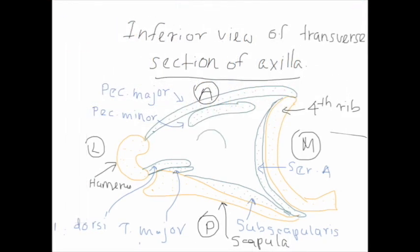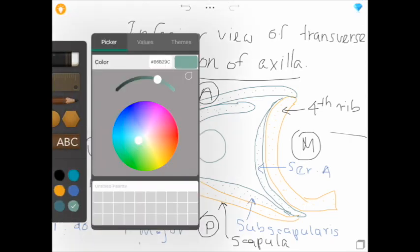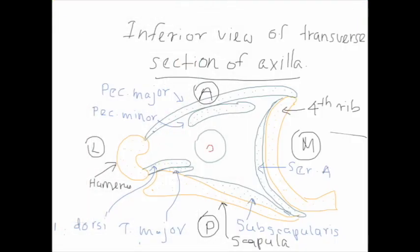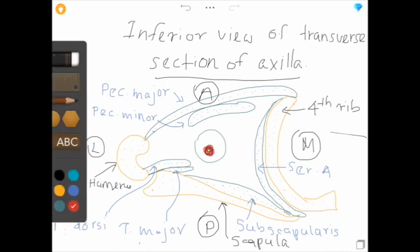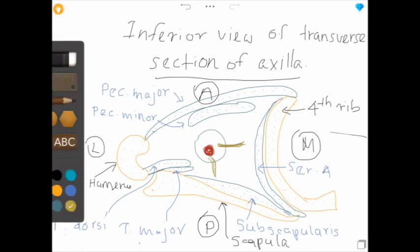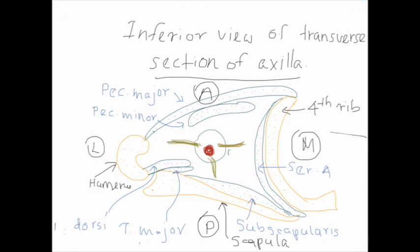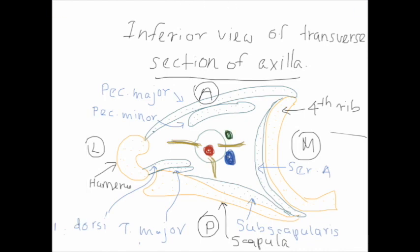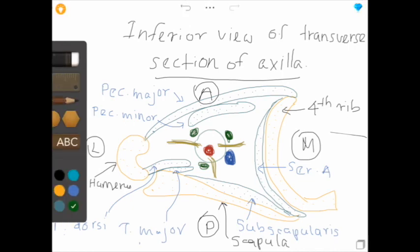Let's look at the contents of the axilla. The axillary sheath is an extension of the pre-vertebral fascia of the deep cervical fascia. The axillary artery and the cords of the brachial plexus are within the axillary sheath. The red color dot is the axillary artery. Now I draw the cords of the brachial plexus. The axillary vein — remember that the axillary vein is not a component of the axillary sheath. The green color dots are axillary lymph nodes, which are also located outside of the axillary sheath.